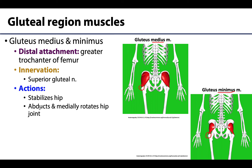The gluteus medius and minimus play a very important role in stabilizing the hip through abduction and medial rotation. It is really this abduction that allows them, when they contract, to prevent the hip from dipping to one side — so they are truly playing a stabilization role. While the gluteus maximus is innervated by the inferior gluteal nerve, the medius and minimus are innervated by the superior gluteal nerve.